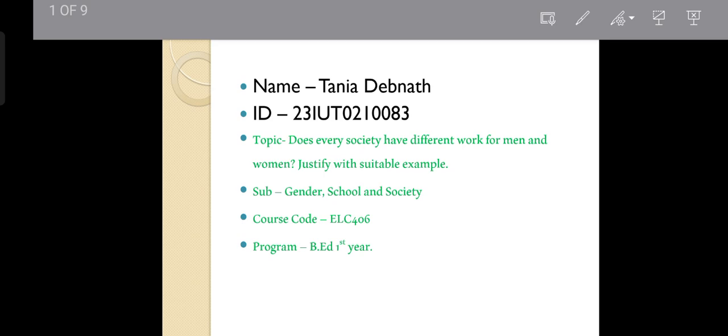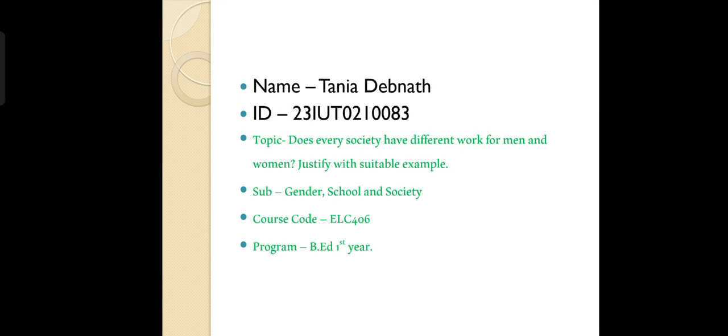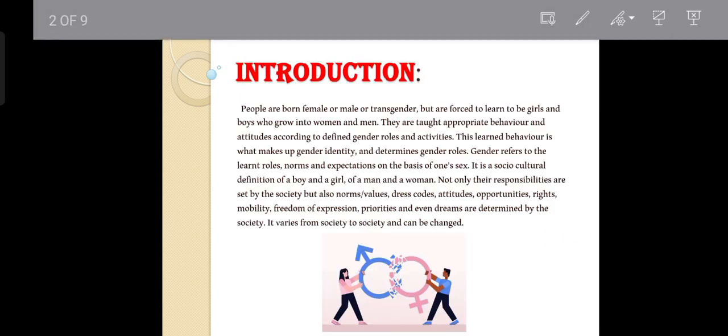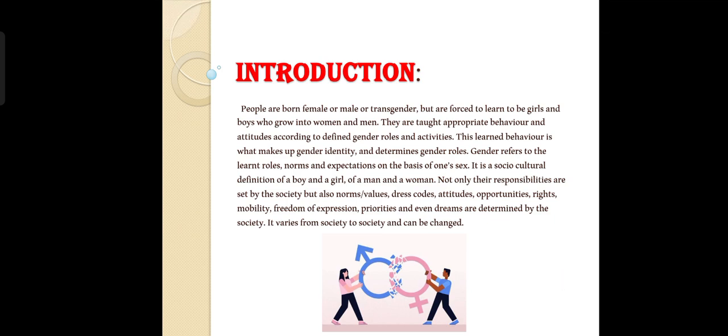First of all, we have to know what is gender. Gender refers to the socially constructed roles and status of women and men, girls and boys. It is a set of culturally specific characteristics defining the social behaviour of women and men, boys and girls and the relationship between them. People are born female or male or transgender but are forced to learn to be girls and boys who grow into women and men. They are taught appropriate behaviour and attitudes according to different gender roles and activities. This learned behaviour is what makes up gender identity.